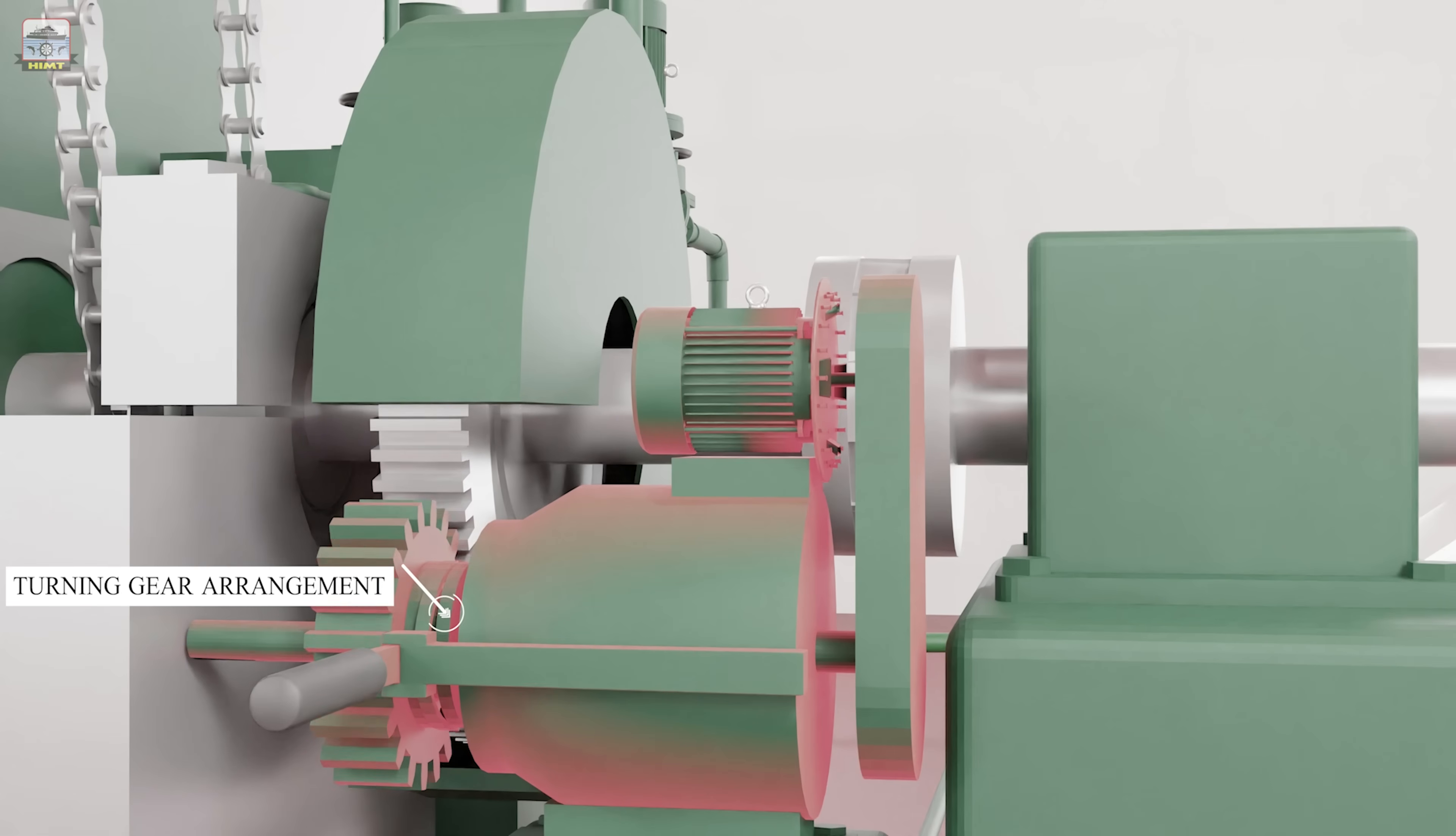The turning gear is a reversible electric motor and a set of gearing arrangement which can be engaged with the toothed flywheel fitted on the crankshaft. This arrangement helps in turning the crankshaft slowly enabling the maintenance of the engine. The turning gear is also used to turn the engine one or two revolutions prior to starting for manually lubricating the liner surface. This turning also helps in ensuring that the engine is free to turn and that no water has collected in the cylinders.